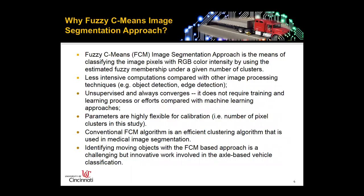Fuzzy C-Means (FCM) image segmentation is a means of classifying image pixels with RGB color intensity using estimated fuzzy membership and a given number of clusters. Why do we choose FCM image segmentation? Because this approach needs less intensive computation compared with other image processing techniques like object detection and edge detection. It is unsupervised and always converges because it doesn't require a training or learning process, unlike machine learning approaches. The parameters involved in this modeling are also highly flexible for calibration.